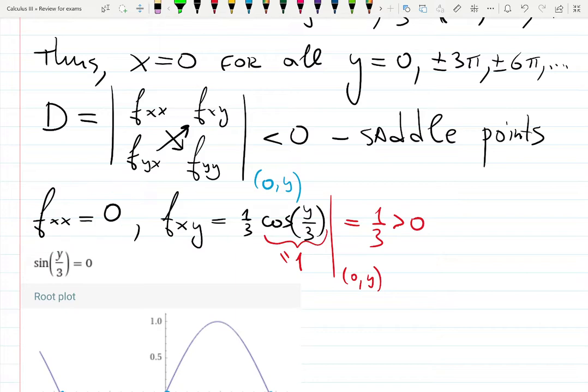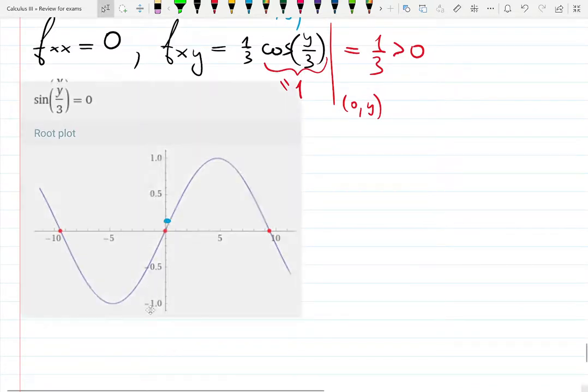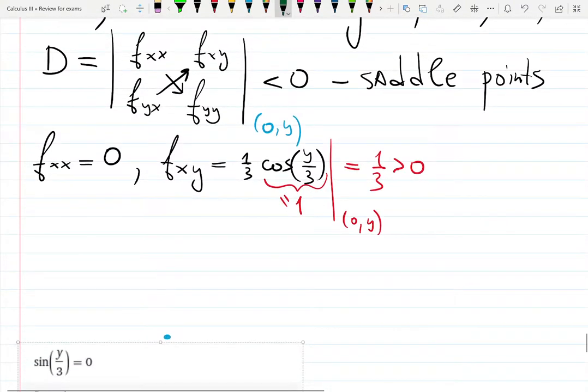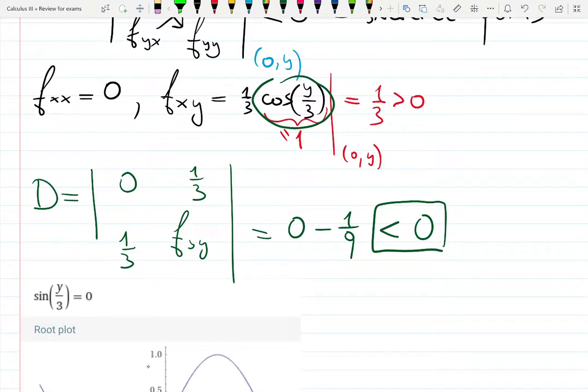These two conditions give us the information that the determinant will be positive or negative. The determinant will be: f_xx is zero, f_yy we could find but it doesn't matter because the whole thing will be zero. This will be 1/3, this will be 1/3. Because no matter what I plug into this cosine, it gives me 1. So it will be zero minus 1/9, and it is negative. What matters is that it is negative. Since it's negative, we can say that we got saddle points.